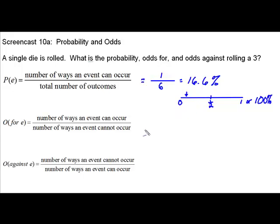When we're looking at the odds of an event occurring, or for an event occurring, notice the similarity. Our numerator still is going to be the number of ways an event can occur. So, if we're looking at our problem, the odds of rolling a 3, that numerator is still going to be 1.